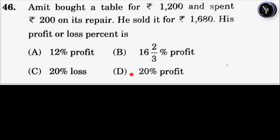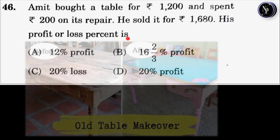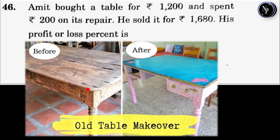Question No. 46. Amit bought a table for Rs.1200 and spent Rs.200 on its repair. He sold it for Rs.1680. His profit or loss percent is — here Amit has bought an old table for Rs.1200 and spent Rs.200 on its repair. After repairing, it got a new appearance and he sold it for Rs.1680. We have to find his profit or loss percent.